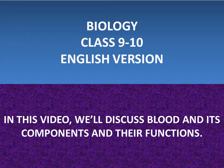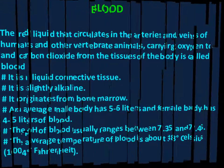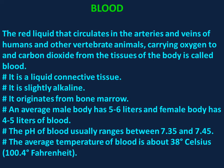Welcome to School 2020. In this video we will discuss blood and its components and their functions. Blood is the red liquid that circulates in the arteries and veins of humans and other vertebrate animals, carrying oxygen to and carbon dioxide from the tissues of the body. It is a liquid connective tissue, lightly alkaline, and originates from bone marrow. An average male body has five to six liters and a female body has four to five liters of blood.